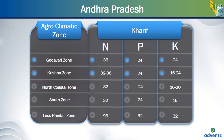For the rice crop planted in the Kharif season in the North Coastal zone of Andhra Pradesh, the amount of nitrogen needed is 32 kgs per acre, phosphorus required is 24 kgs per acre and potassium is needed to the amount of 16 to 20 kgs per acre. For the rice crop planted in the South zone of Andhra Pradesh in the Kharif season, the amount of nitrogen required is 32 kgs per acre, the amount of phosphorus required is 24 kgs per acre and the amount of potassium required is 16 kgs per acre.